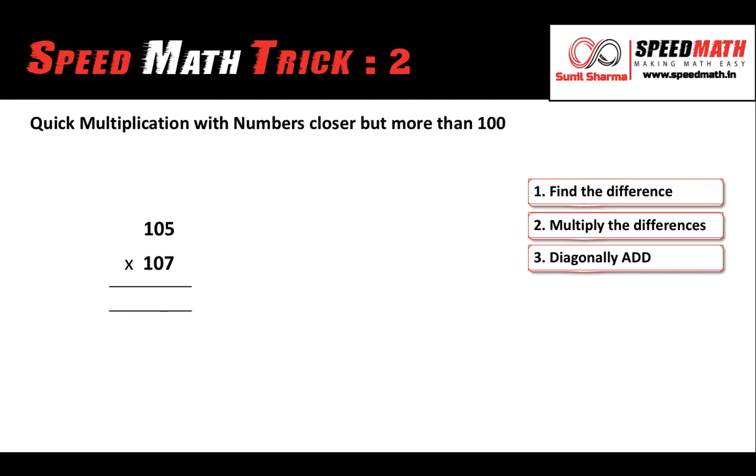Now I'll go very fast. Now tell me, 105 is how much more than 100? Yes, it is 5 more, so I'll write plus 5. Similarly, 107 is 7 more than 100, so I'll write plus 7 in the circle. Now let's multiply the numbers in the circle: 7, 5 × 7 is 35. It's already a double digit, we are not supposed to put any 0. Diagonally we are going to add because the sign is plus. So 105 plus 7 will give you 112.